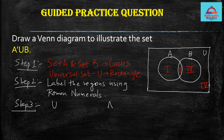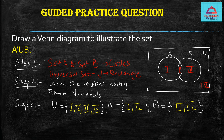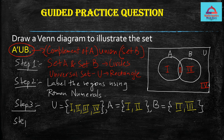Step three: write the three sets clearly. The universal set, written in roster form, has all four regions: I, II, III, and IV. Set A has regions I and II. Set B has regions II and III. We need to find A complement union B. We will take the complement of A first and then take its union with set B.